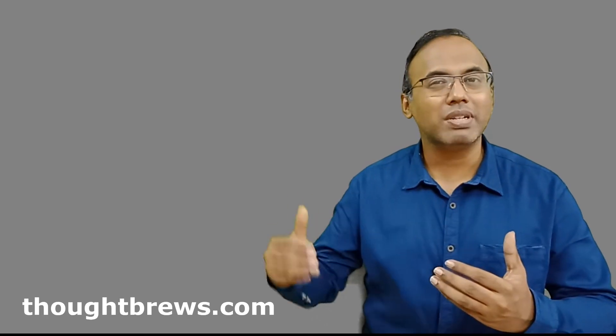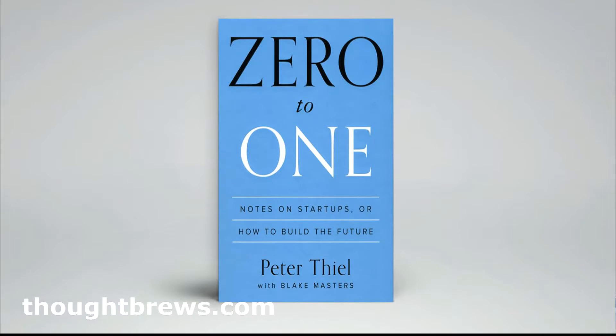Peter Thiel gives speeches about entrepreneurship and business at educational institutions and colleges. While he was giving a speech at Stanford, one student took extensive notes about whatever he spoke in the class. When the student showed those notes to Peter Thiel, he was very impressed, and both of them sat together, refined it, and published it as a book called Zero to One.